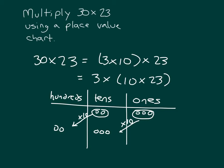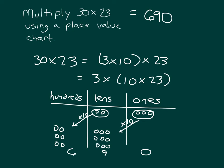So we started with 23 and multiplied by 10. What we haven't done is multiply by 3 yet. To multiply by 3, we take those 2 hundreds and make 2 more copies of them. So in the hundreds place we have 6, in the tens place we have 9, and in the ones place we have 0. So 30 times 23 is equal to 690 from our place value chart.